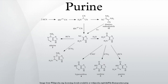Purines and pyrimidines make up the two groups of nitrogenous bases, including the two groups of nucleotide bases. Two of the four deoxyribonucleotides and two of the four ribonucleotides — the respective building blocks of DNA and RNA — are purines.